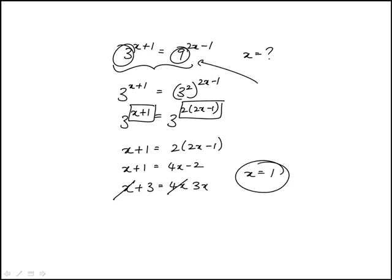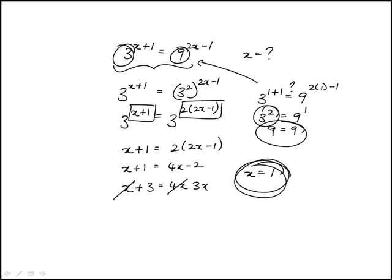And you can also check your answer if you'd like to replace x with 1 and see if they are indeed equal. So this is 3 squared, this is 9 to the 1, 3 squared is 9, is indeed equal to 9 to the 1. So the answer is x equal to 1.